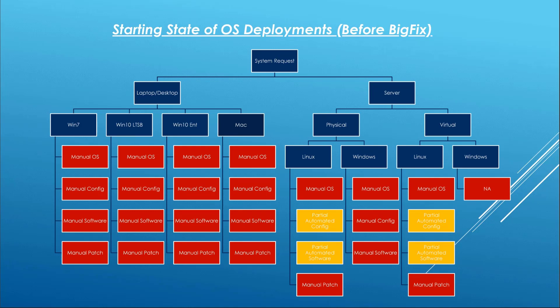Red indicates that there was no automation going on — a lot of handheld or manual user software and operating system installation. Yellow indicates that there was some automation going on, for instance Linux, where they had done some nice work using Chef to create automation around deploying the operating system and getting some software on there, but it still wasn't fully streamlined.